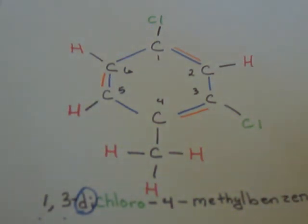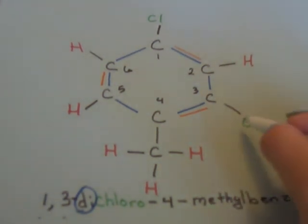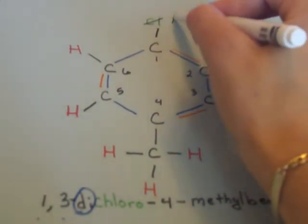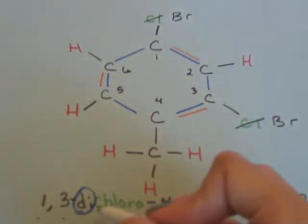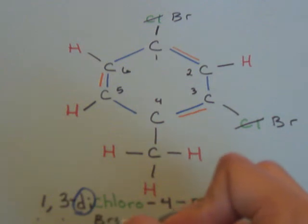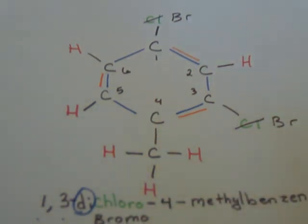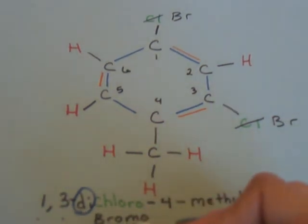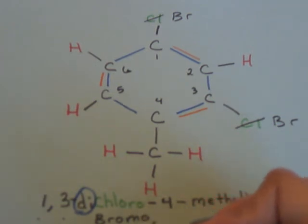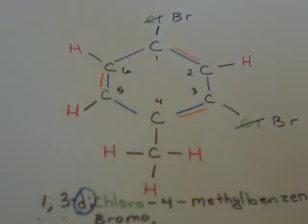Every time that you have a halogen, say we had bromine - so instead of it being Cl, we would have Br right here. It would be bromo. So just take notice of that ending: chloro, bromo. But for the purposes of the problem, we have chloro. And then we would go to number 4, because that's where something else is occurring, and we have a methyl group.